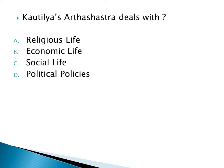Kautilya's Arthashastra deals with: Option A: Religious Life, Option B: Economic Life, Option C: Social Life, Option D: Political Policies. The right answer is Option D: Political Policies.